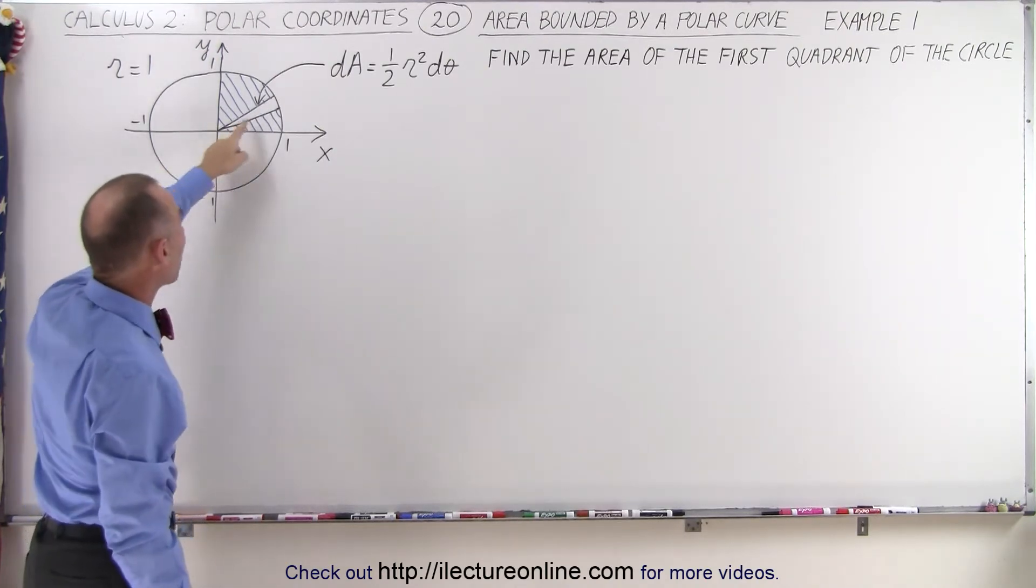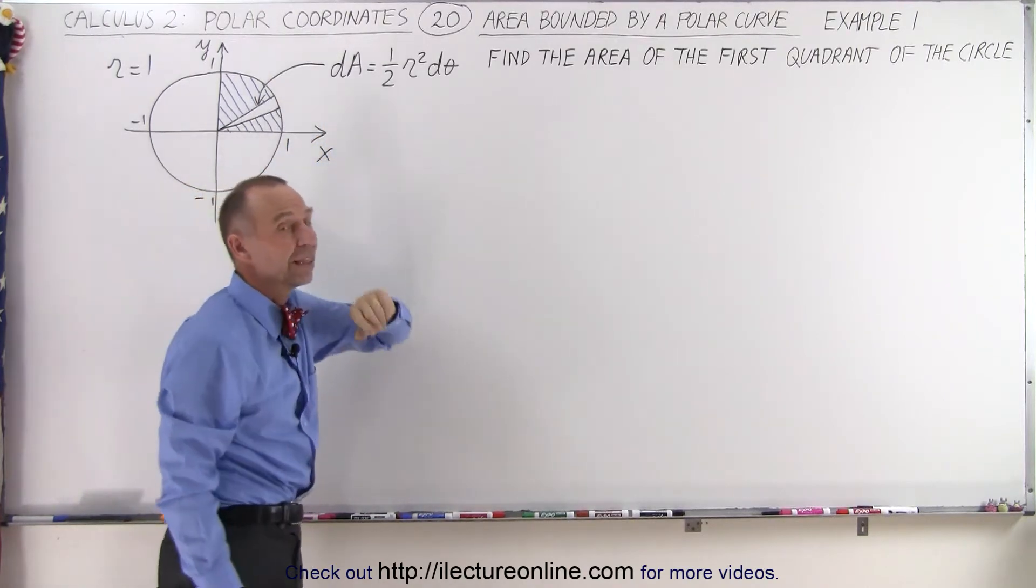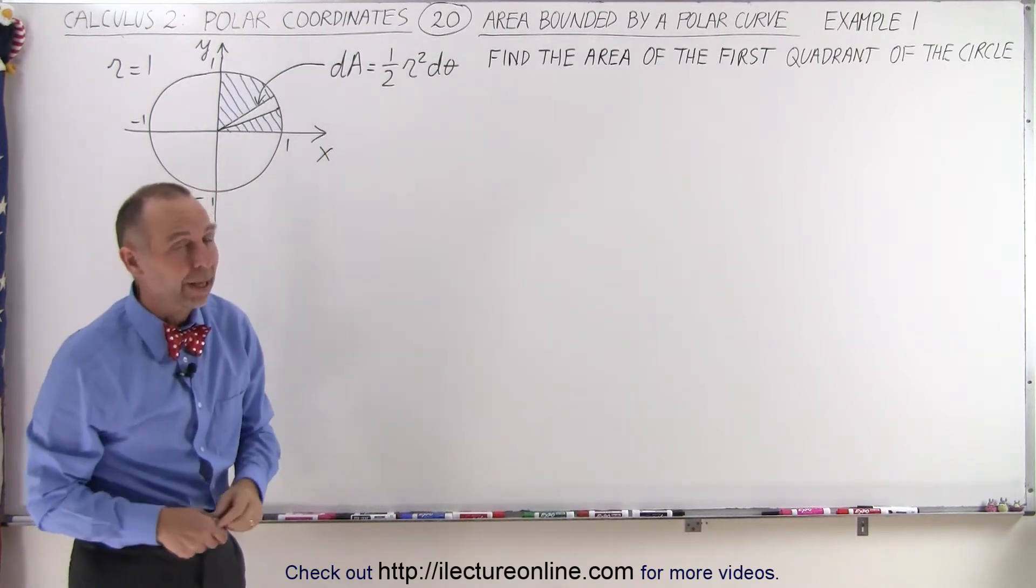We know that the small area element is defined as dA, which is one-half the radius squared times dθ, or the function squared times dθ, depending upon how you want to write it.